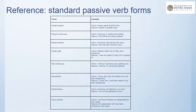On this slide, you will find a table with each of the most common verb tenses in English, showing an example of what they look like in active voice and what the same sentence would look like in passive voice. For example, in the simple present, the active sentence is 'people speak English here', and the passive form is 'English is spoken here.' That's how we make the passive in the simple present. Take a few minutes to have a look at the rest of this table.